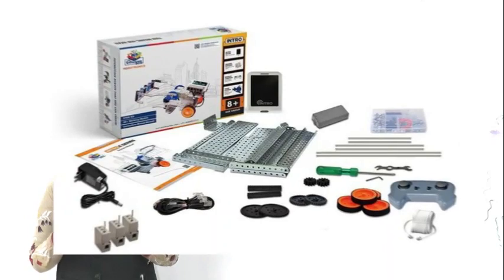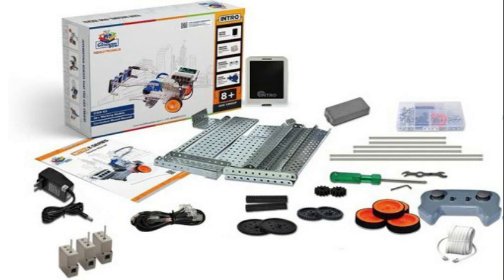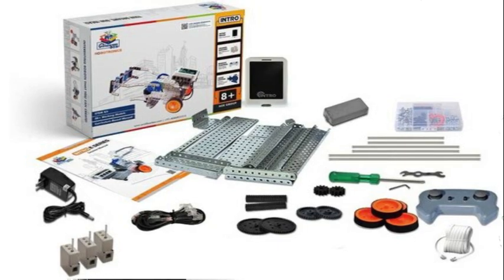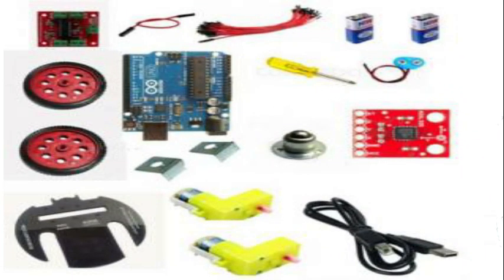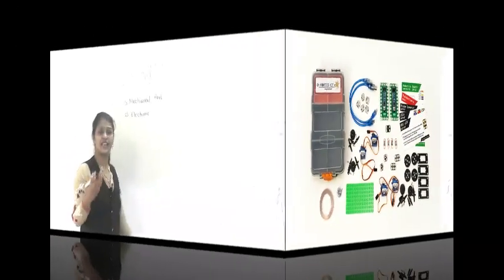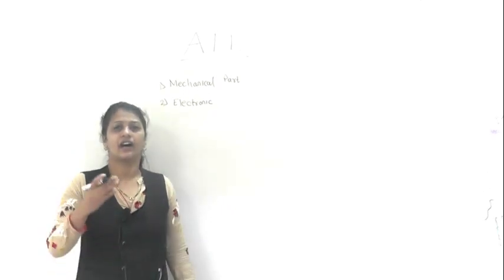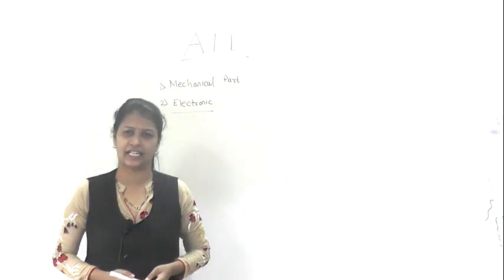So what is actually robotics? Robotics consists of some mechanical parts, as I have shown you in the first video. We have discussed about mechanical parts. Then there are also some electronic parts - there are mechanical parts and electronic parts.